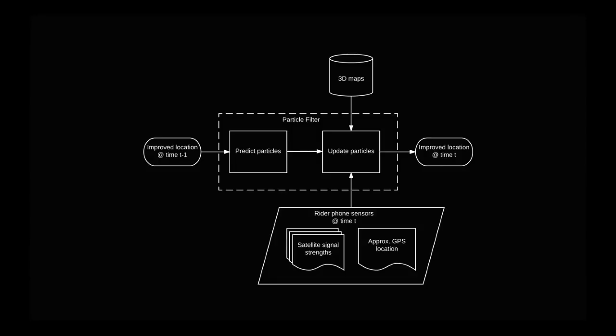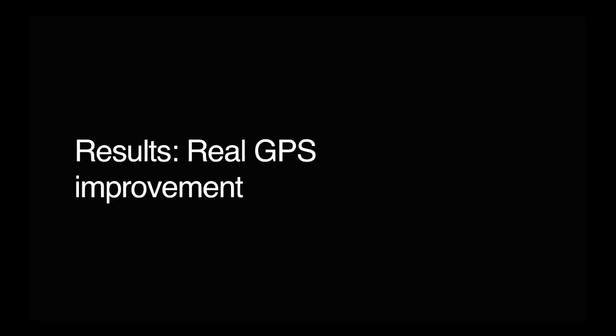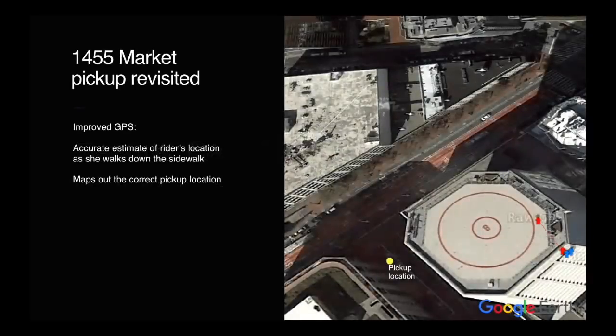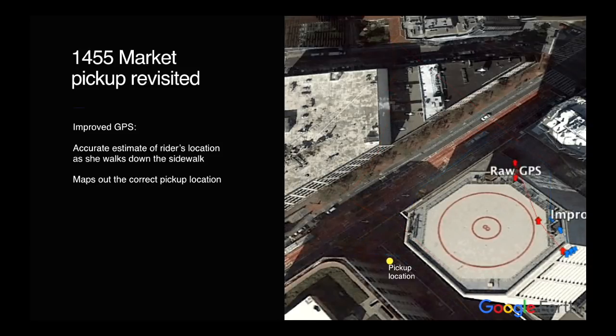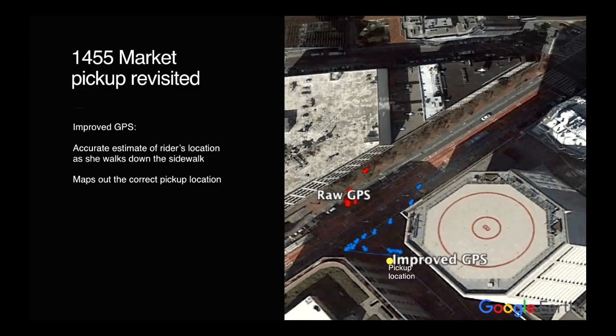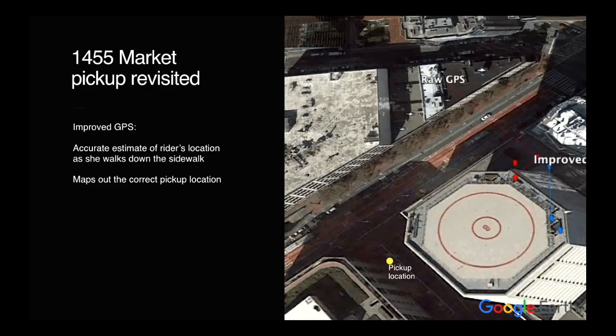So here's that diagram again now that we've walked through it. You take the particles from the last update, you advance them forward, you look at how well do the satellite signal strengths match up against the 3D maps, and then you produce a totally new particle set. And the result is a pretty good-looking GPS trace. So now you can see that the rider actually goes along the south side of Market and ends up waiting at the pickup point there. And so now we've actually taken a super noisy signal that's downright misleading and turned it into a pretty accurate representation of what is happening.